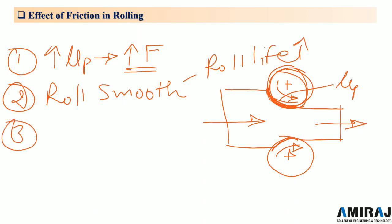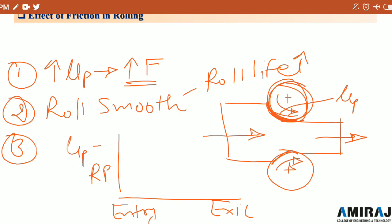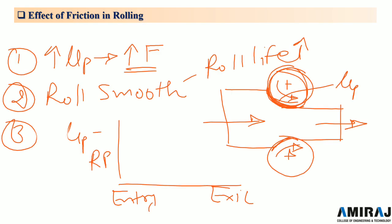Third, with an increase in coefficient of friction, the neutral point shifts towards the entry point, which we have seen in the roll pressure versus length-of-contact graph. When mu_p decreases, the neutral point shifts towards the exit point, as can be seen from the graph.